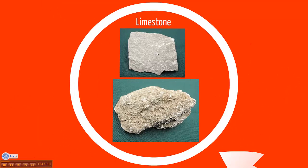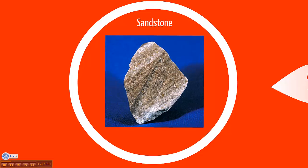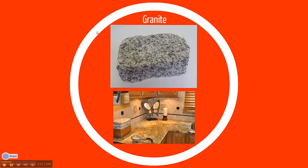Following now are some examples of these stones used in Egyptian architecture. Here we have some limestone. This is an example of sandstone. And here is an example of granite. Now some of you may have seen granite before — it is often used for countertops in kitchens.